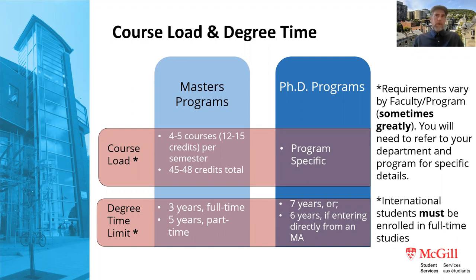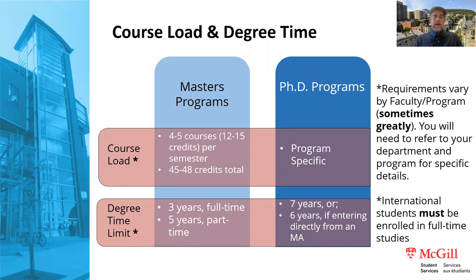For master's programs, students can generally expect to take four to five courses per semester. At three credits per course, you can expect to graduate in about two years. Keep in mind this is an average — requirements vary by faculty and program, sometimes greatly. Engineering students, for example, are notorious for having a much heavier course load. Definitely refer to your program's website or reach out to your program if you have questions about your specific course load.